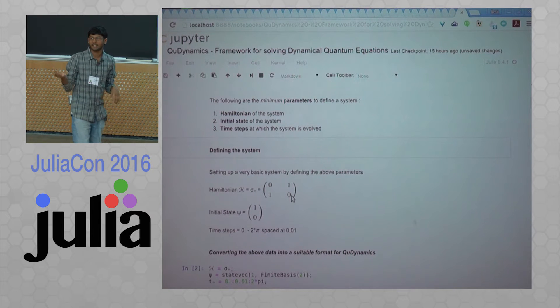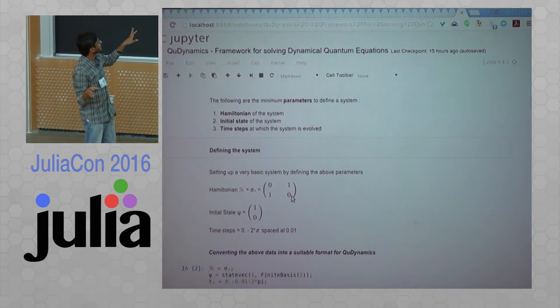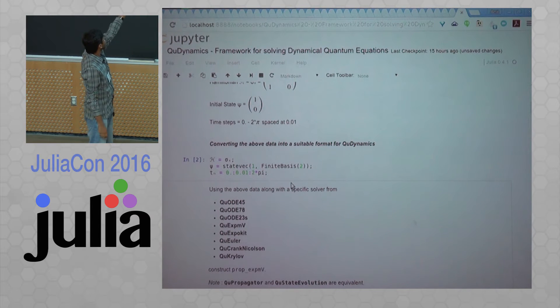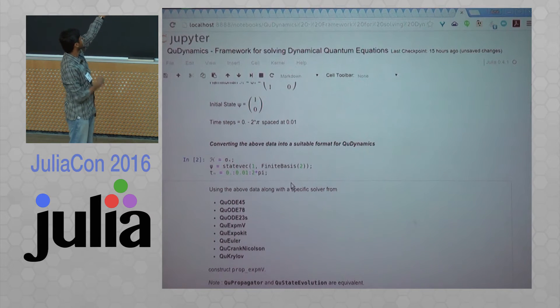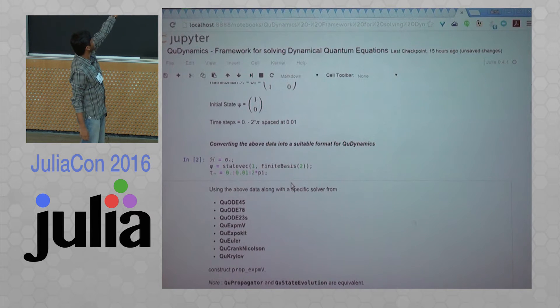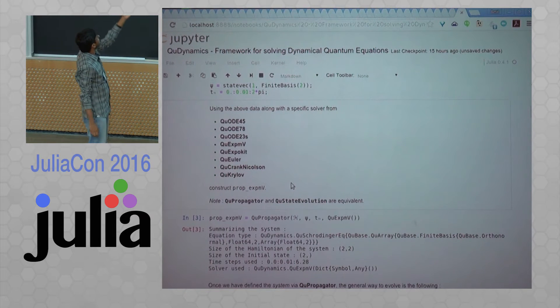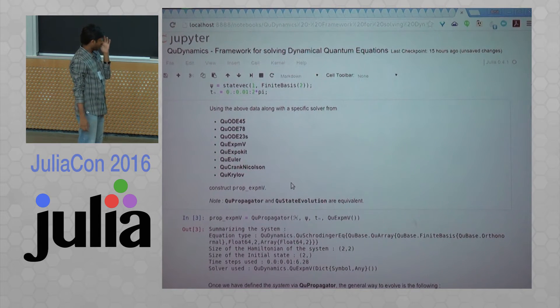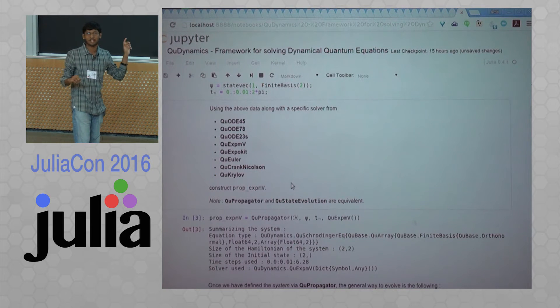It is basically a differential equation: d psi by dt equals H psi. That is what we are looking at. We have converted this data into a suitable format for Qdynamics. The sigma x comes from QuBase, even the state vector comes from QuBase. And then you have time steps which is a float range. There are a range of solvers that you can actually use: ODE45, ODE78, ODE23S, ExpoKit, Euler, Crank-Nicholson. These MCWF can also be used, but it is different from the conventional setting that we have for these solvers.